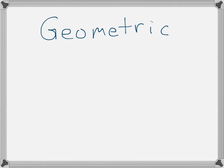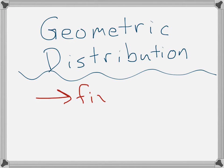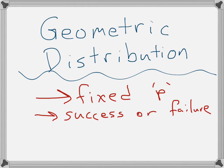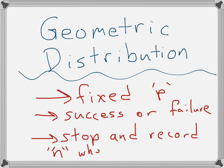The next idea is a geometric distribution. The geometric distribution is really similar to a binomial distribution. The first two characteristics are very similar: we have a fixed probability of success, P, and success or failure — two options. Like in the multiple choice example, there's one probability of success and one failure. The key difference is that in a geometric distribution, we keep trying over and over again until we get a success — until we find that first success.